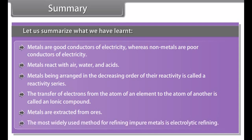Summary. Let us summarize what we have learned. Metals are good conductors of electricity, whereas non-metals are poor conductors of electricity. Metals react with air, water and acids. Metals being arranged in the decreasing order of their reactivity is called a reactivity series. The transfer of electrons from the atom of an element to the atom of another is called an ionic compound. Metals are extracted from ores. The most widely used method for refining impure metals is called electrolytic refining.